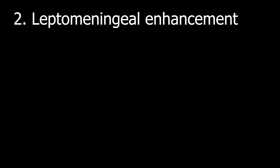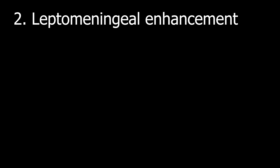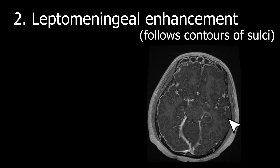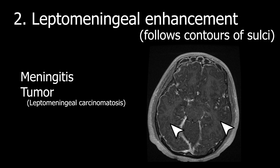Number two is leptomeningeal enhancement, which refers to enhancement along the surface of the brain — i.e., the pia-arachnoid. This will follow the contours of the sulci. The two most important things to consider are infectious meningitis as the primary consideration, and tumor — i.e., leptomeningeal carcinomatosis due to spread of tumor — among other entities covered in the course.